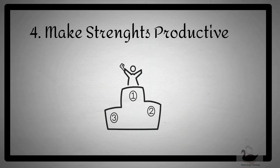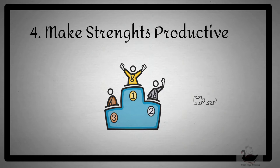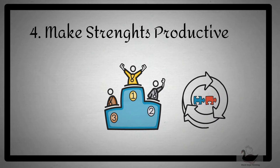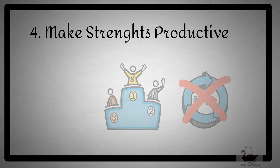Which leads us to part four, which is making strengths productive. Peter Drucker notes that effective executives focus on their strengths and the strengths of those around them. He further states that staffing your organization to avoid weakness results in mediocre performance. The problem is that most people did not know their strengths.